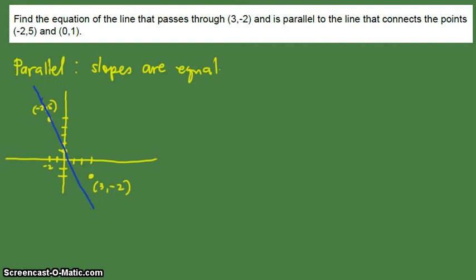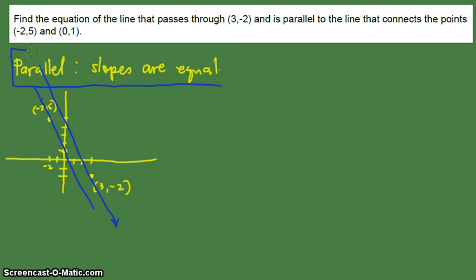So there is a line passing through the points (-2, 5) and (0, 1). The line that we need is parallel to this line and is passing through the point (3, -2). So the line we have to find the equation for is passing through (3, -2) and is parallel — they have the same orientation in this direction.